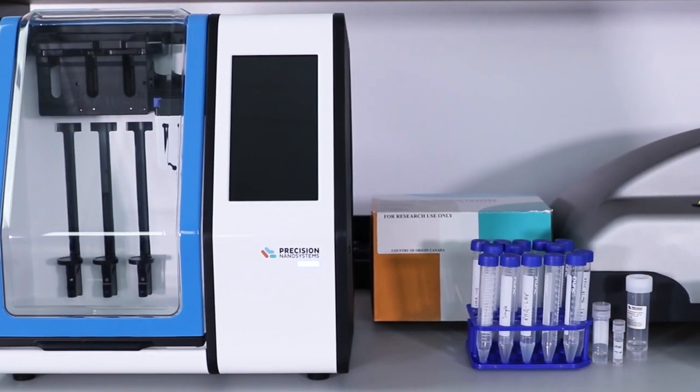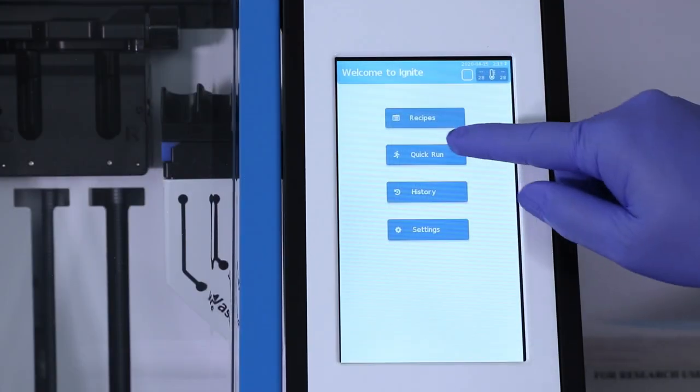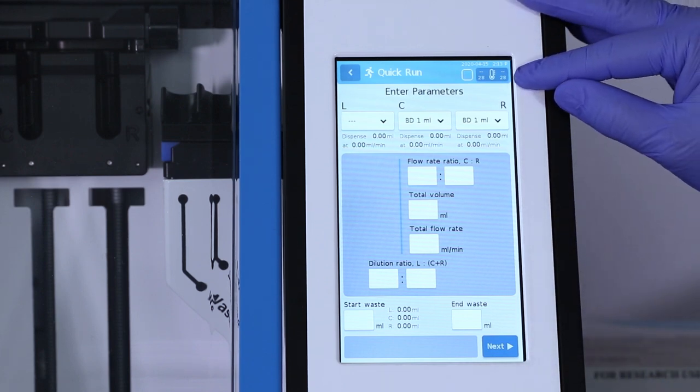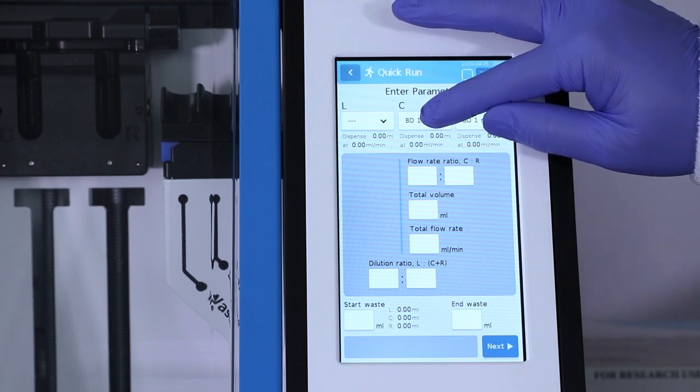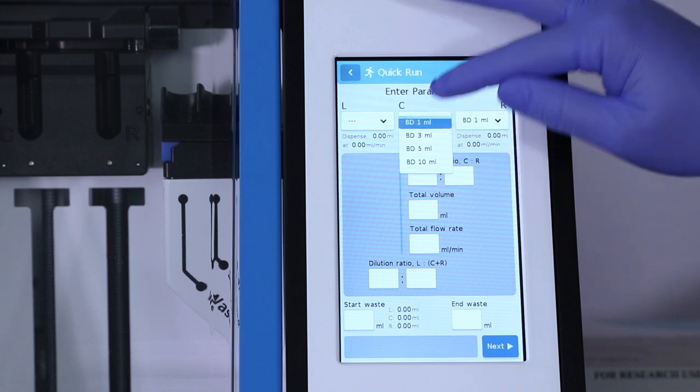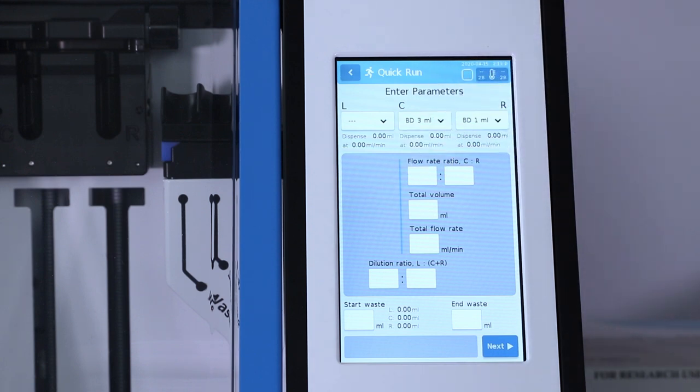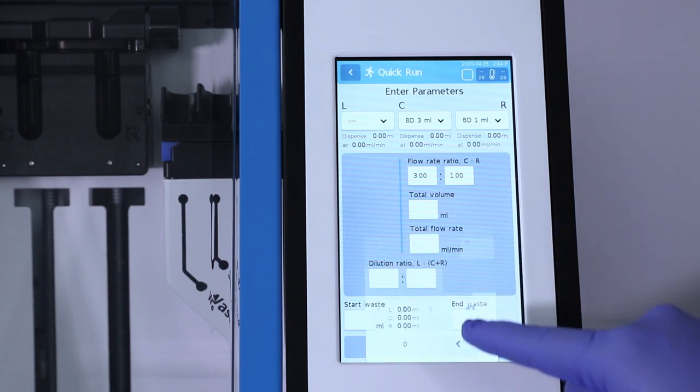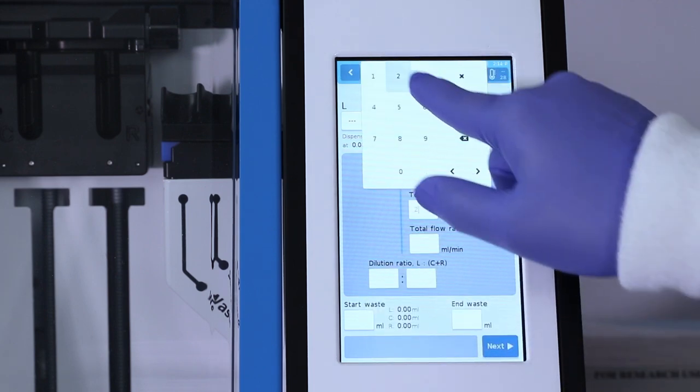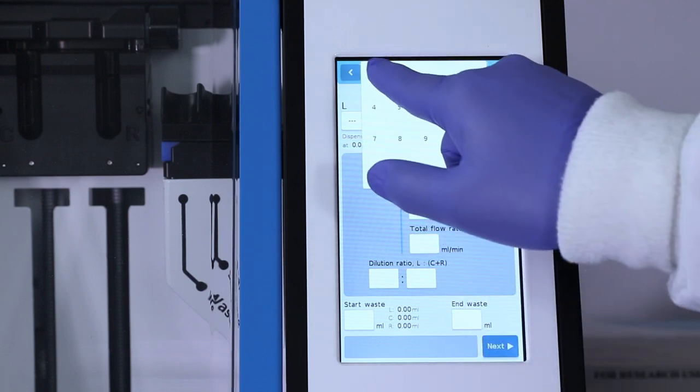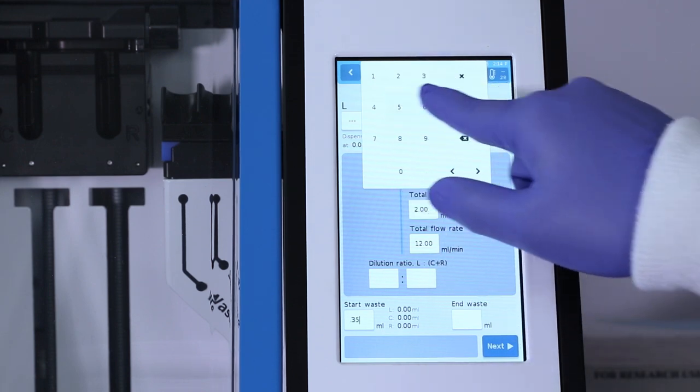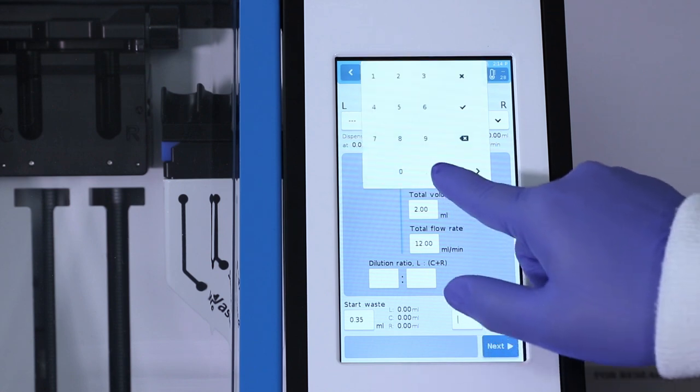So now we're going to prepare the NanoAssembler Ignite for the formulation. I'll use the quick run function, and in here I'll be able to set the different parameters that we'll need. We'll select the type of syringes that we'll be using in this experiment. For a 2 mL formulation, I'll need a 3 mL syringe on the C inlet, and a 1 mL syringe on the R inlet. Our flow rate ratio here is 3 to 1, which I'll enter here on the touch screen. Our total volume here is 2 milliliters, and our total flow rate will be 12 mL per minute. I will also be including a little bit of start and end waste, 0.35 for start waste, 0.05.